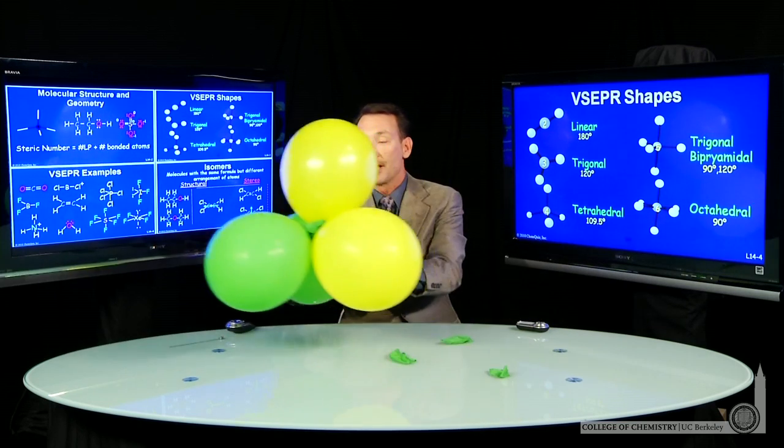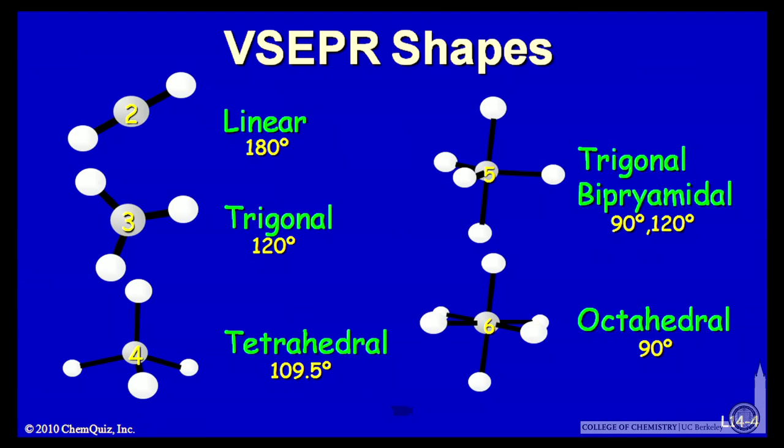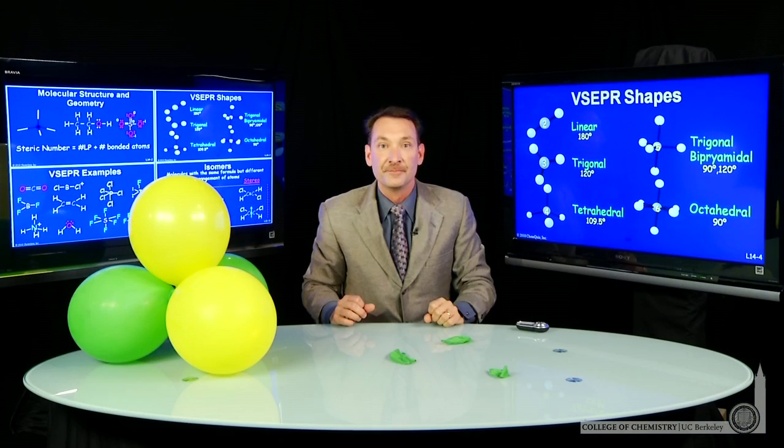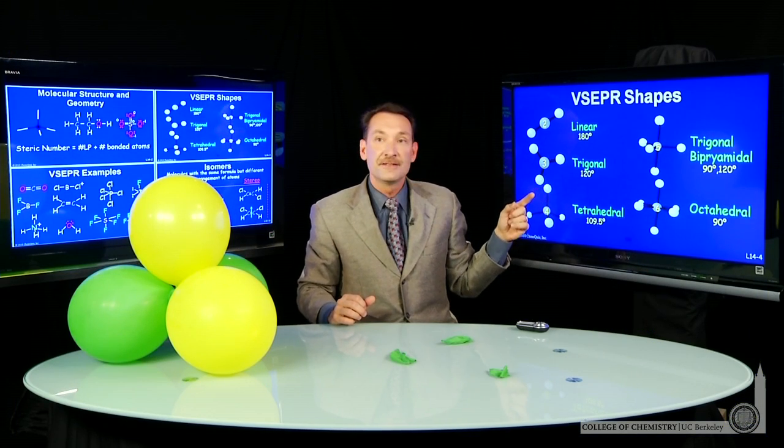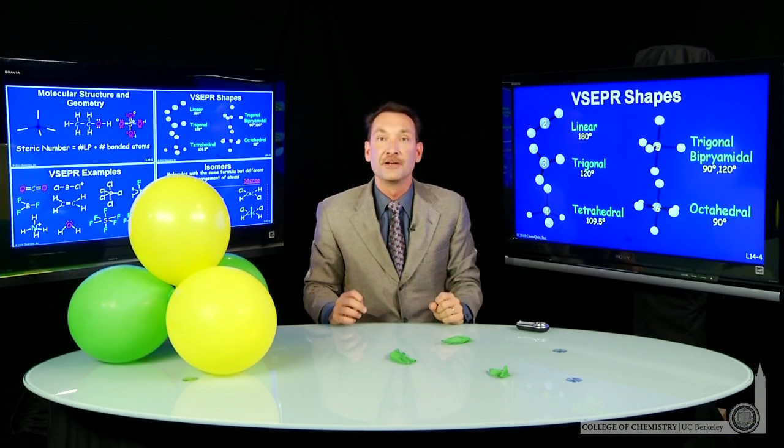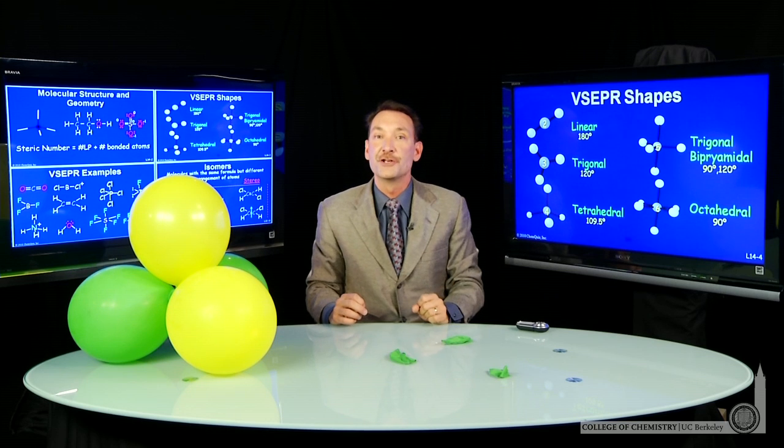And of course, I could continue. I don't think we have to pop a balloon to go down to the trigonal arrangement. That's three things arranged in space. We know those are in a plane. Whenever you have three points, you define a plane. So three things, steric number three, gives you a trigonal arrangement. Bond angle is 120 degrees.